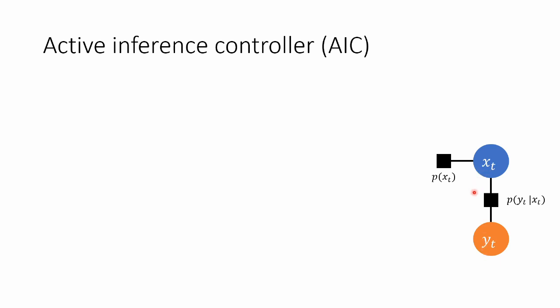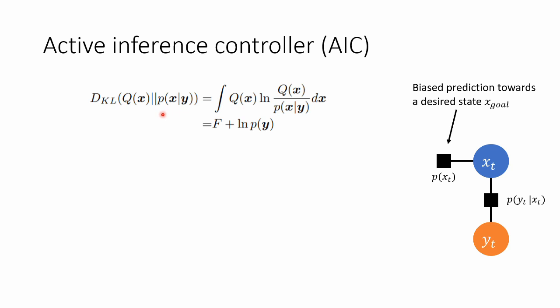So what is the difference in this Active Inference controller? Well, it's exactly like one of these Bayesian filters, like a Kalman filter, but this prior is biased towards the target. So we predict that we move closer to the target every time step, regardless of what's actually happening in the world. And minimizing that prediction error will make this come true.